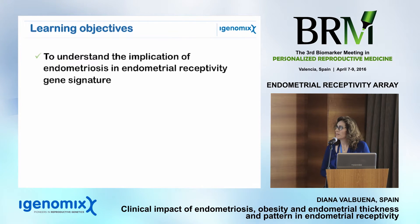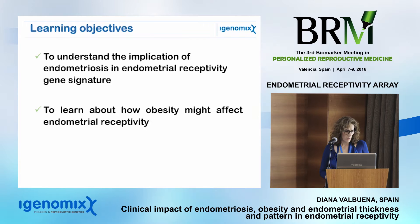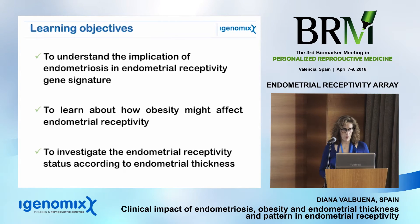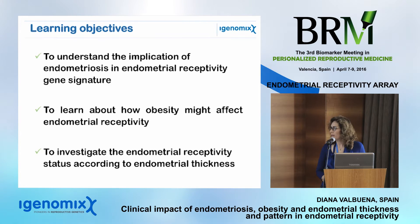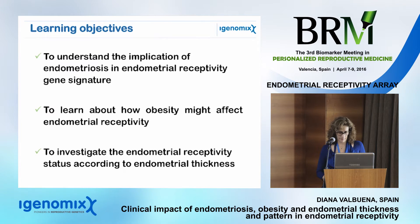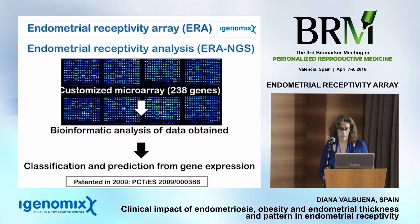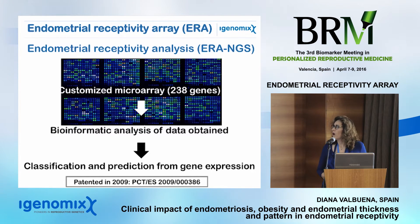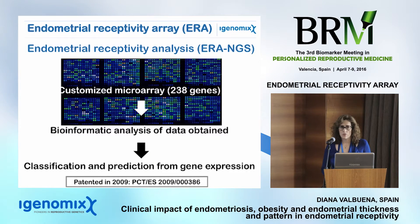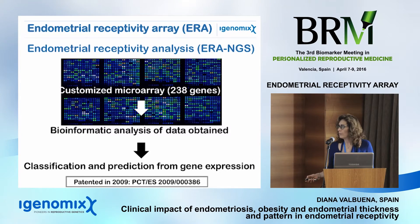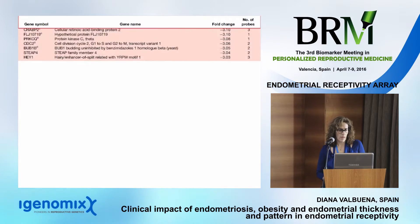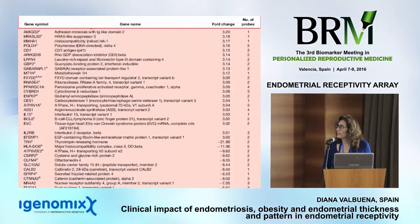The first objective will be to understand the implication of endometriosis in endometrial receptivity gene signature. The second will be to learn about how obesity might affect the endometrial receptivity. And the third will be to investigate the endometrial receptivity status according to the endometrial thickness. The ERA is comprised of 238 customized genes and a bioinformatic tool that can predict and classify the endometrium and endometrial receptivity.